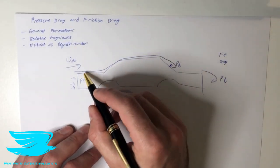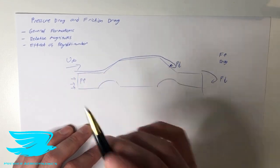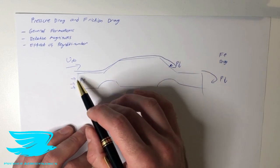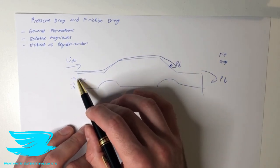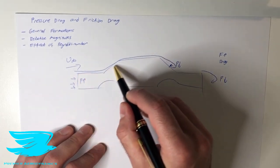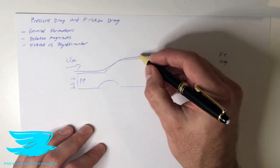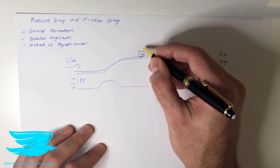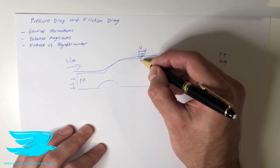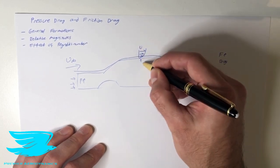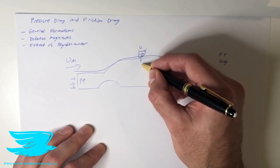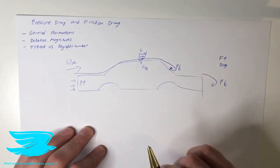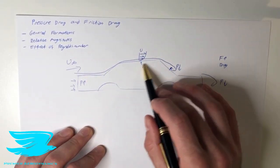Friction drag, on the other hand, occurs through the flow actually going over the vehicle. Interestingly, the flow hitting the car at the front has zero velocity, so there's actually no friction drag occurring there theoretically. However, the flow going over the top of the car that stays attached does produce friction drag, because if we look at the boundary layer near the wall, there is a boundary layer forming and the velocity right near the wall is quite high. The faster this flow is going, the higher the friction drag will be.